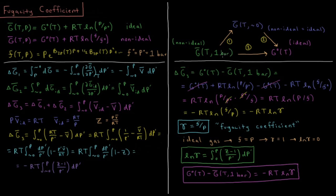Since the Gibbs energy is a state function, it doesn't matter how we go from one state to another — it just matters that we get there. So the Gibbs energy change during process three equals ΔG̅₁ plus ΔG̅₂, which is the integral from 0 to P of the ideal molar volume minus the real molar volume, integrated over pressure.